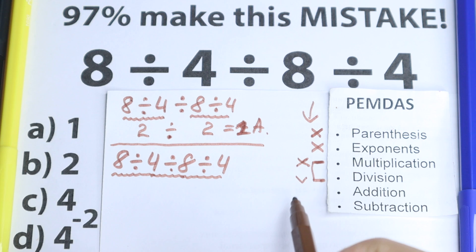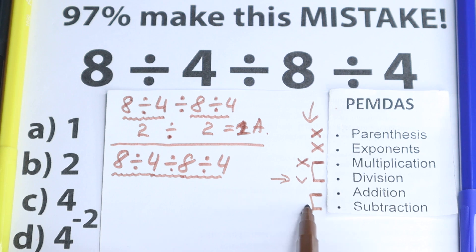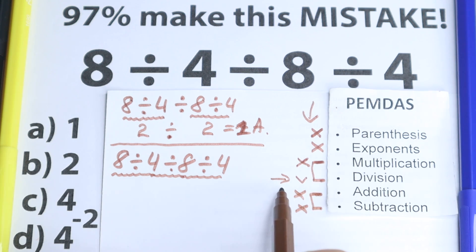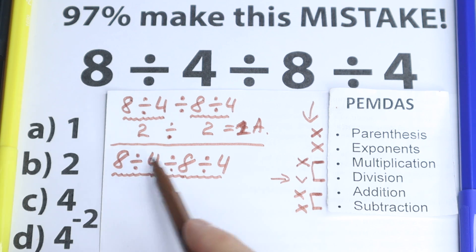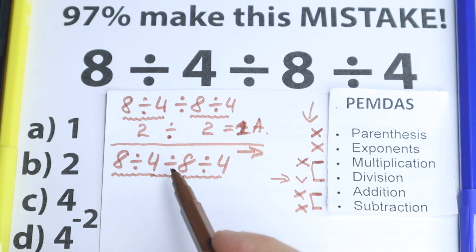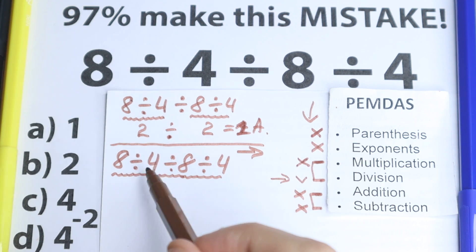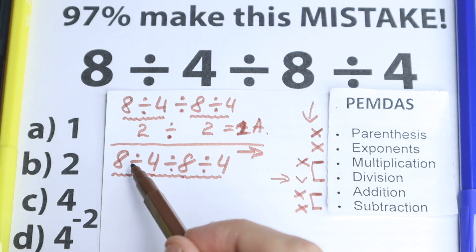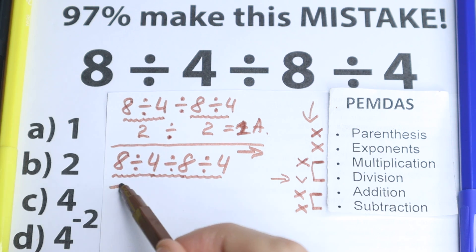So we skip the multiplication part — we have only the division part. We don't have any addition and subtraction part either, so we skip those as well. We have only division. But here's our main question: what is the correct order to do this problem — from left to right, from right to left, from the middle? In PMDMC the correct order is from left to right. We need to scan for the first sign from left to right. Right here, this division is the first sign, this is the second sign, and this is the third sign.